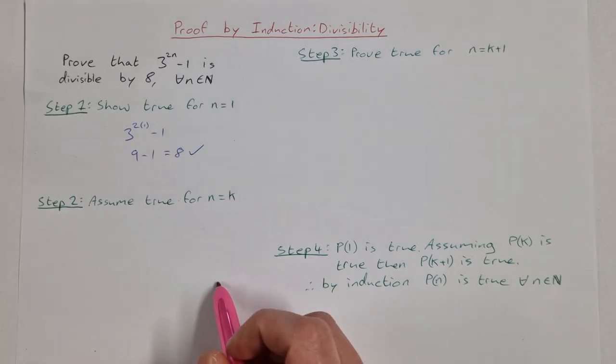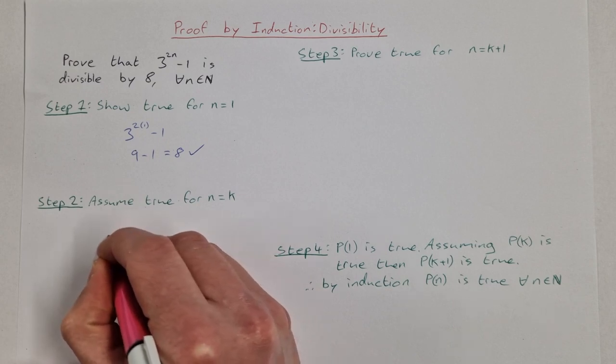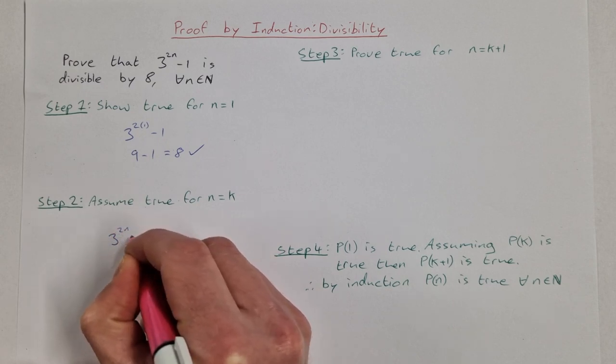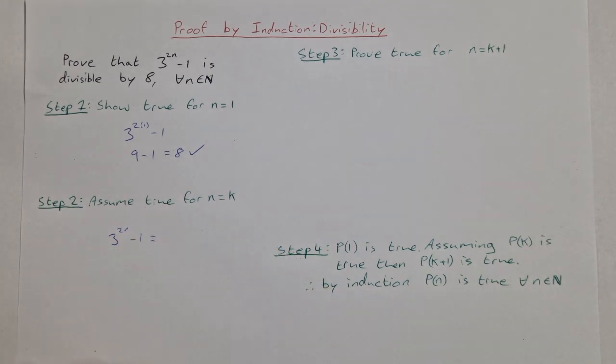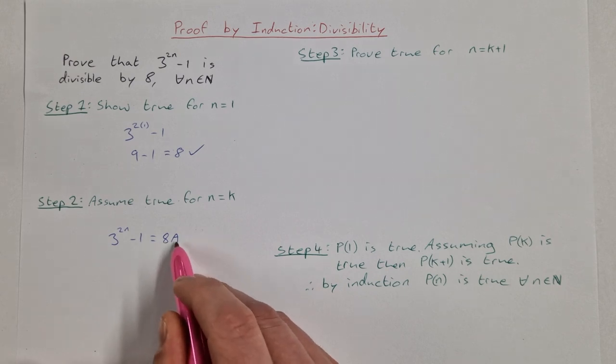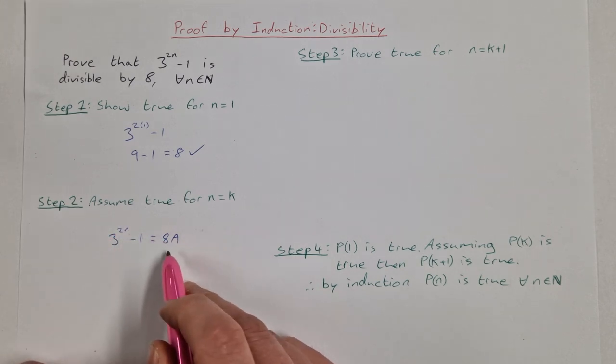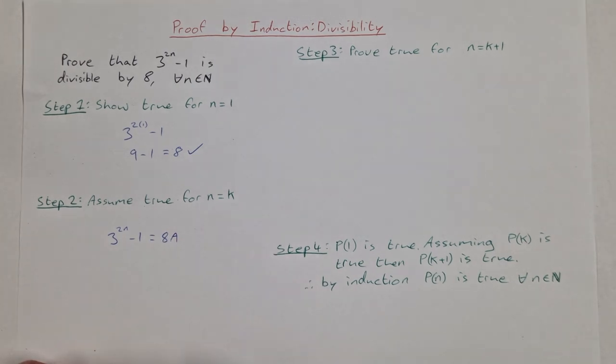Step 2: Assume true for n equals k. So you just sub in k instead of n. We can say 3 to the power of 2k minus 1 equals 8a, which is just 8 times a number. If it is divisible by 8, then you can write it out as a factor of 8 times some other number.